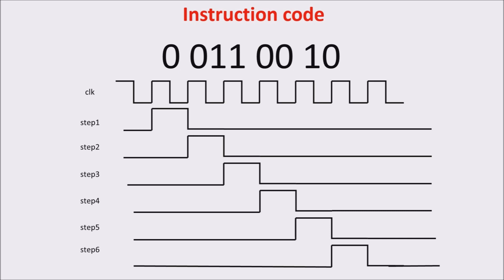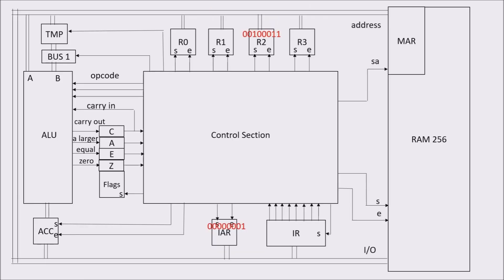In the first three steps, we put on the bus the instruction address, increment it by one, and fetch the instruction in the instruction register. In the second three steps — steps four, five, and six — we execute the instruction.